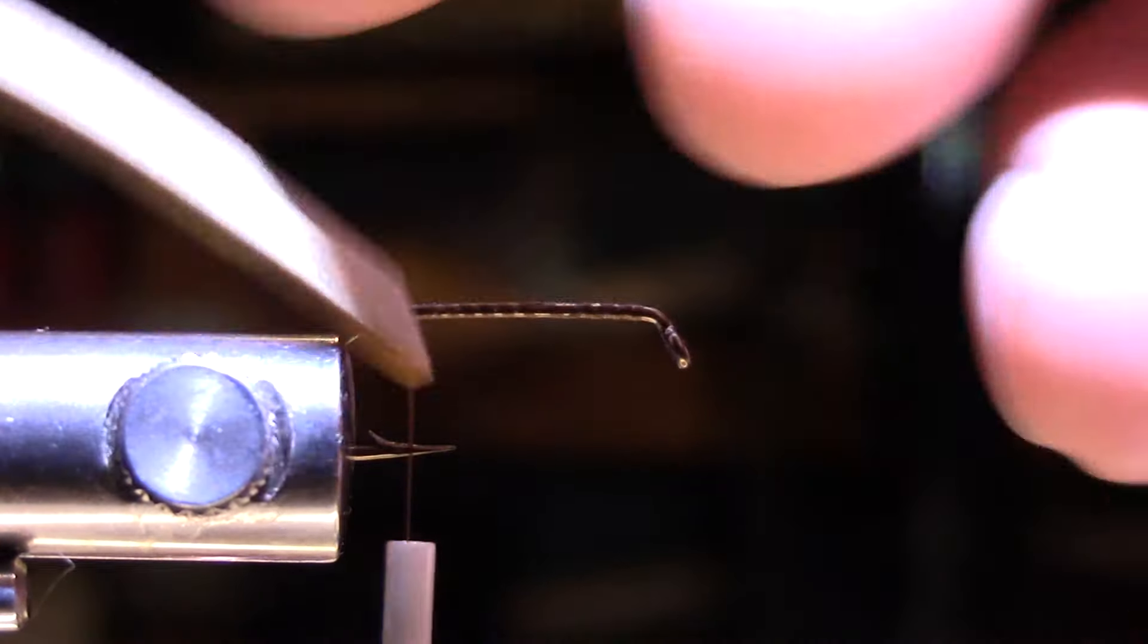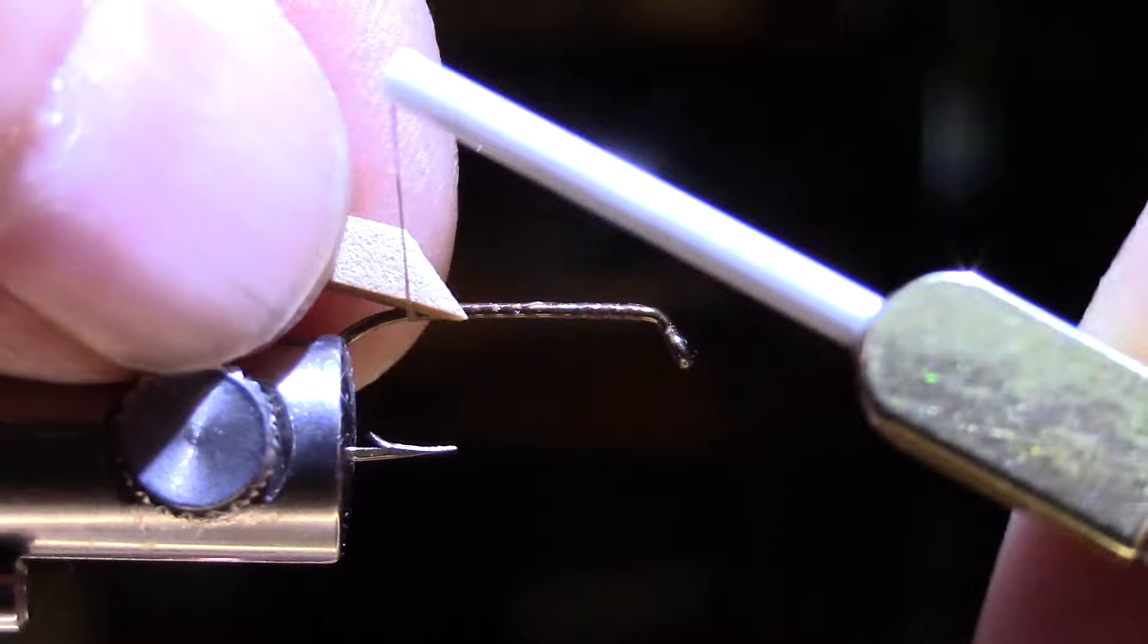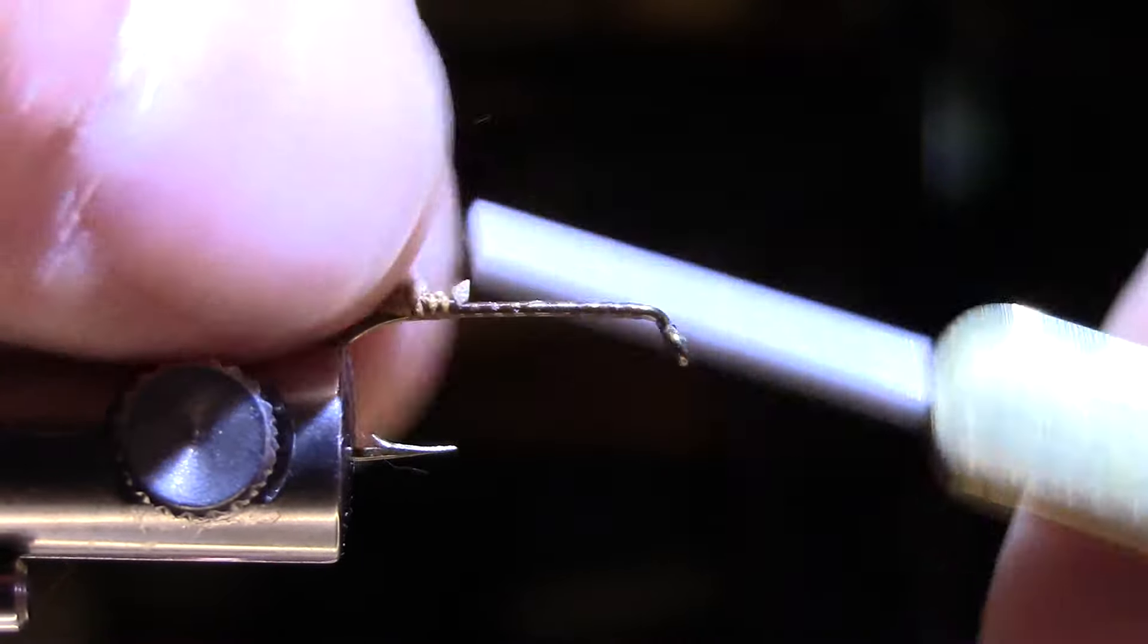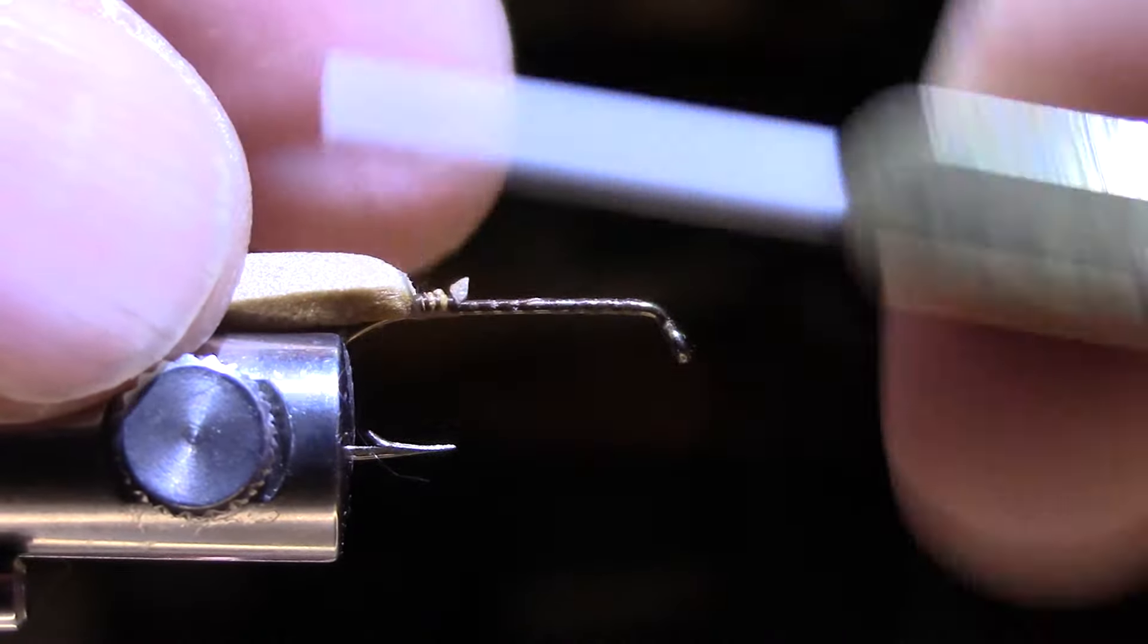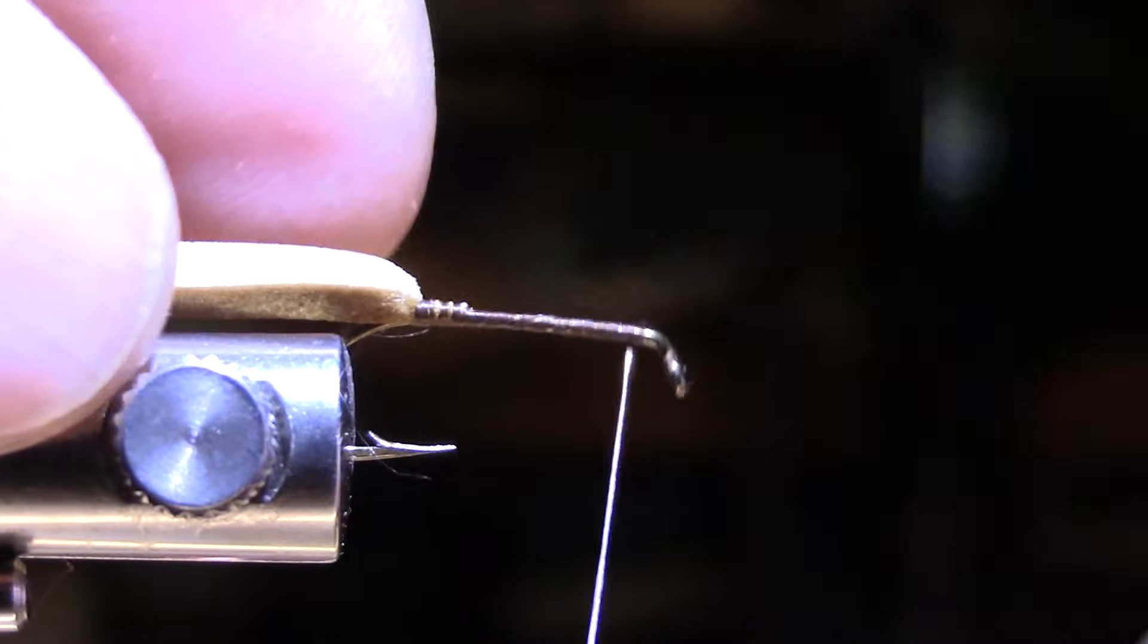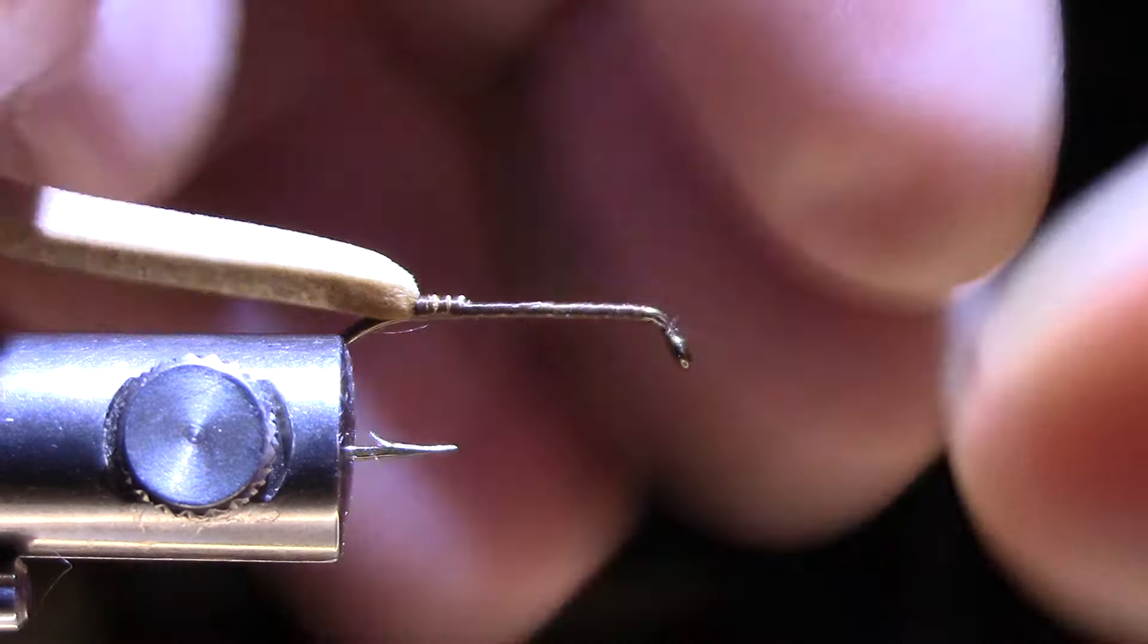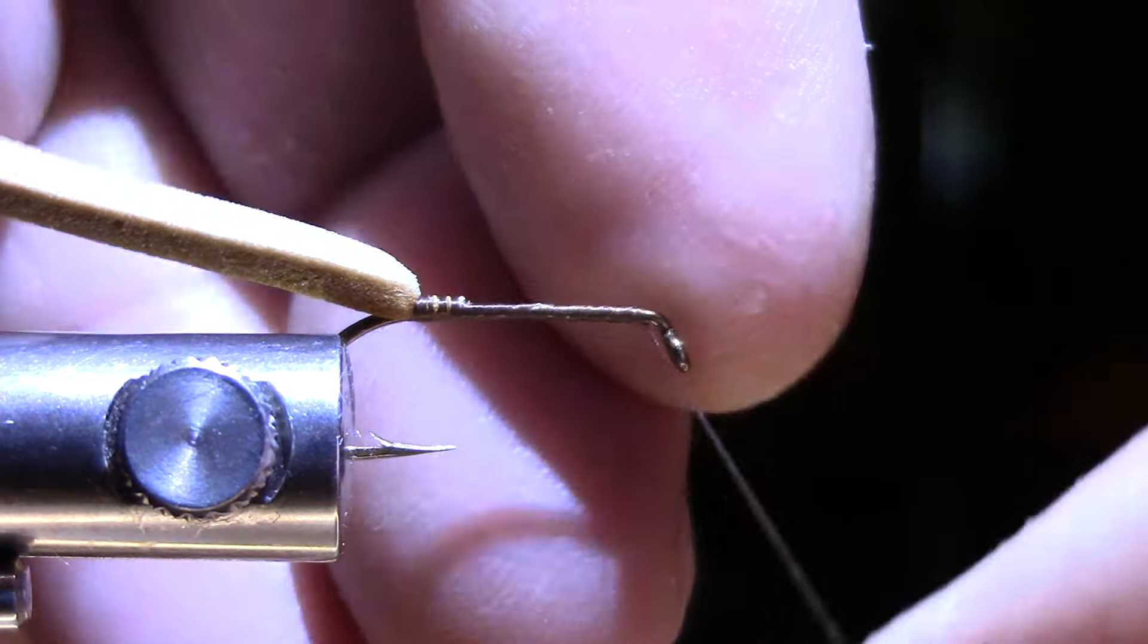So once I get that edge colored, I'm just going to take my scissors and I'm just going to cut that to a point, the colored edge being the longest. And I'm going to hold this up and I'm just going to catch this cut edge. Make sure that's tied down very well, and then I'm just going to bring this thread all the way up to about 1 to 2 eye lengths from the eye. Another half hitch here.